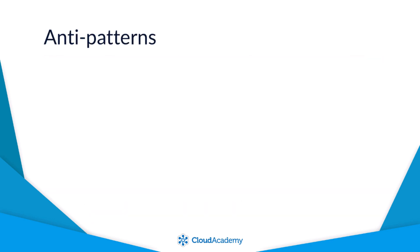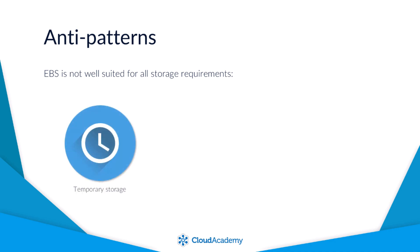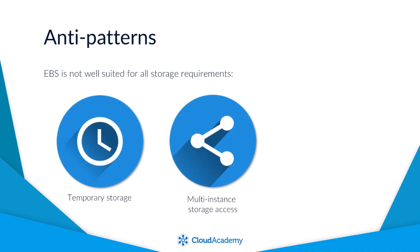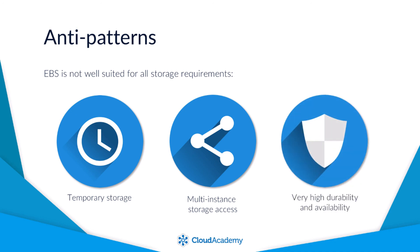EBS offers a number of benefits over EC2 instance store volumes, but EBS is not well suited for all storage requirements. For example, if you only needed temporary storage or multi-instance storage access, then EBS is not recommended or possible, as EBS volumes can only be accessed by one instance at a time. Also, if you needed very high durability and availability of data storage, then you would be better suited to use Amazon S3 or EFS, the Elastic File System.